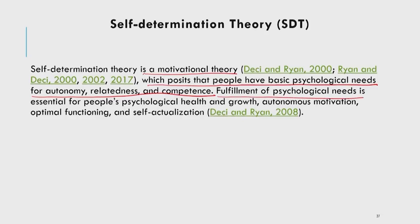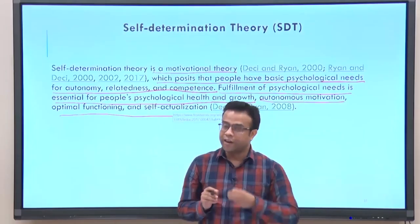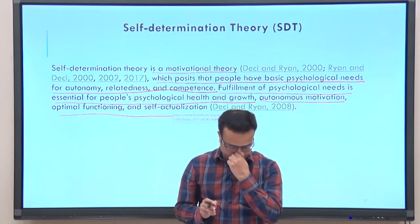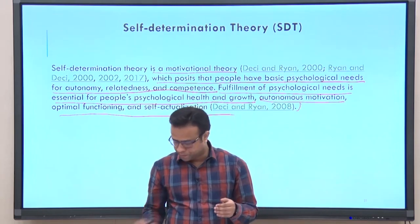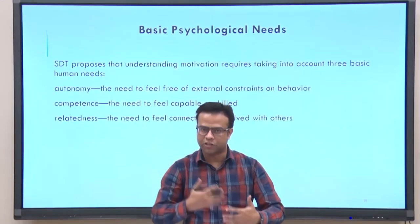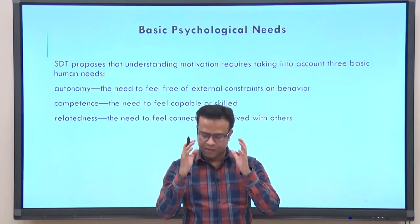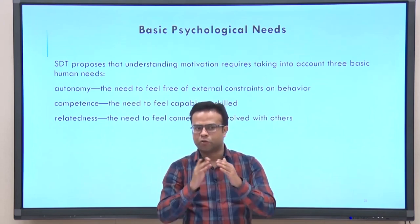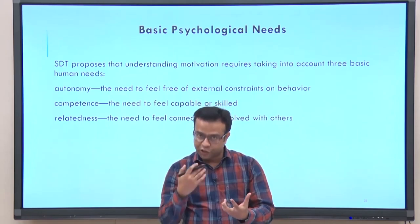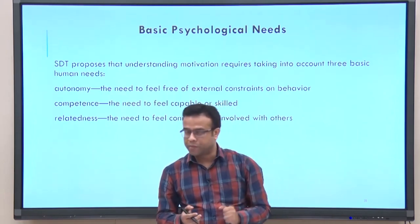Fulfillment of these psychological needs is essential for people's psychological health, growth, autonomous motivation, optimal functioning, and self-actualization. According to SDT, these three basic psychological needs are universally present among all human beings — just as we have physical needs like food and water, we have these universal basic psychological needs essential for our well-being.